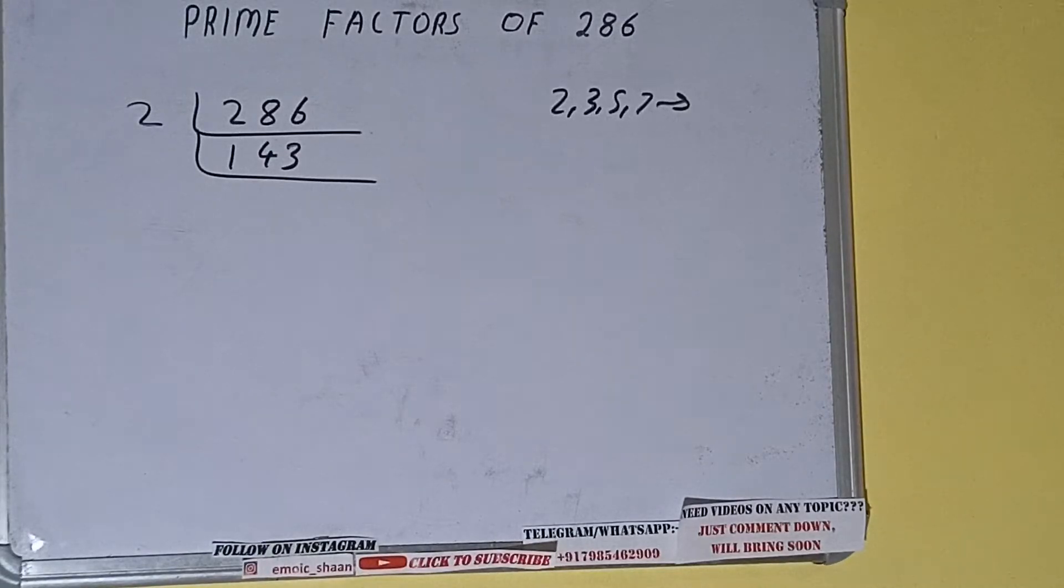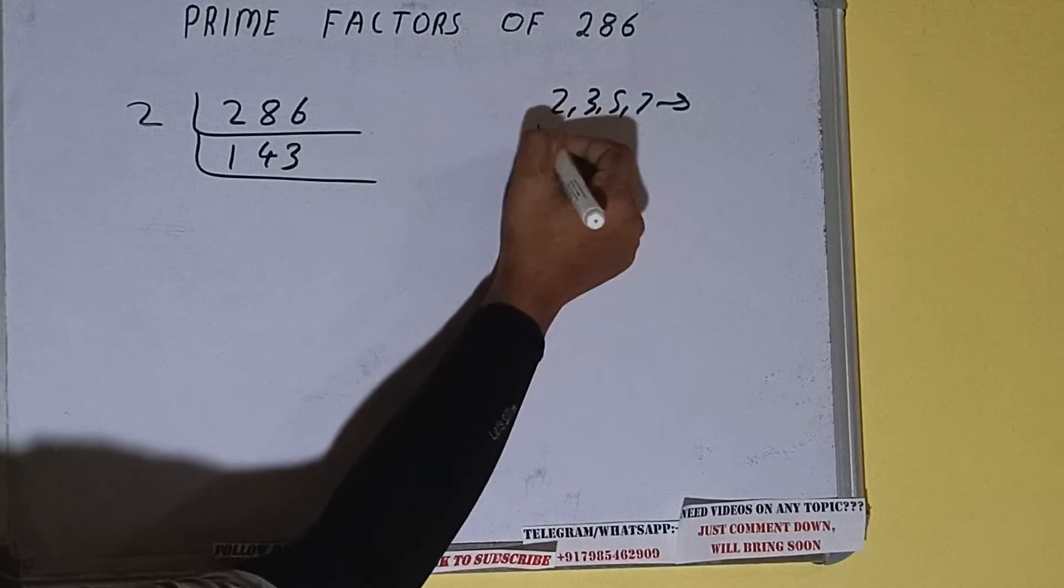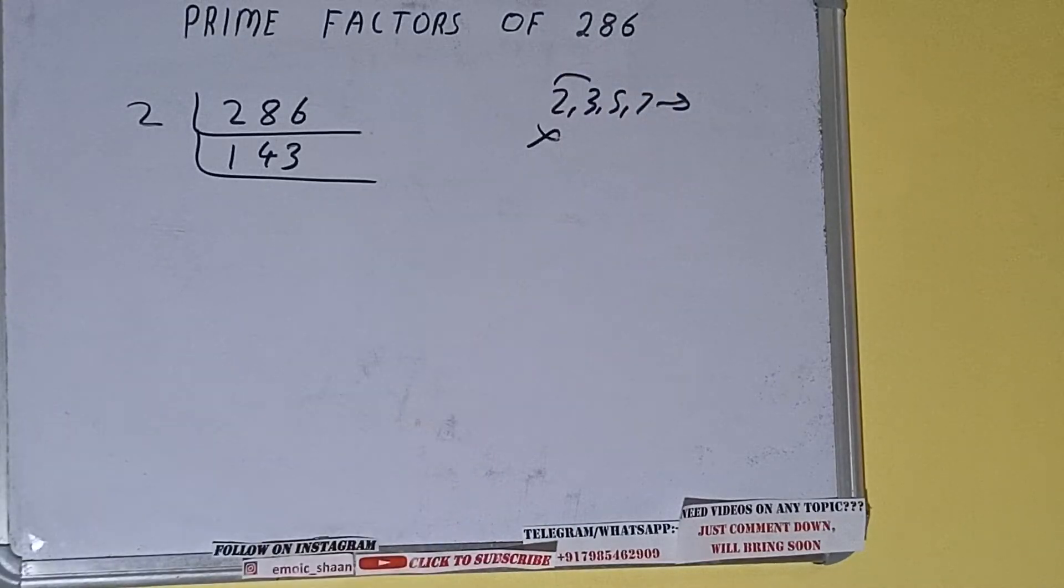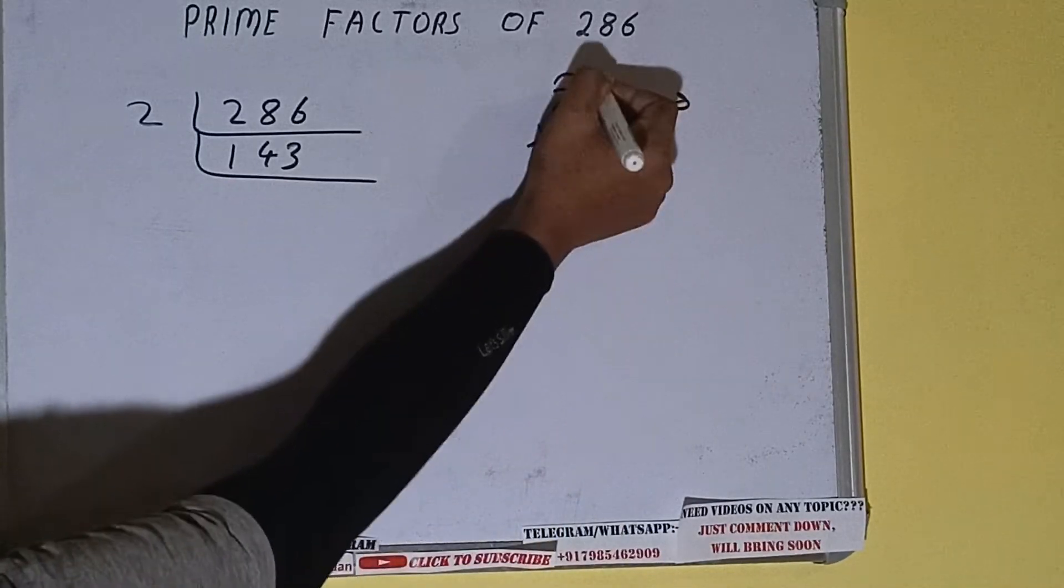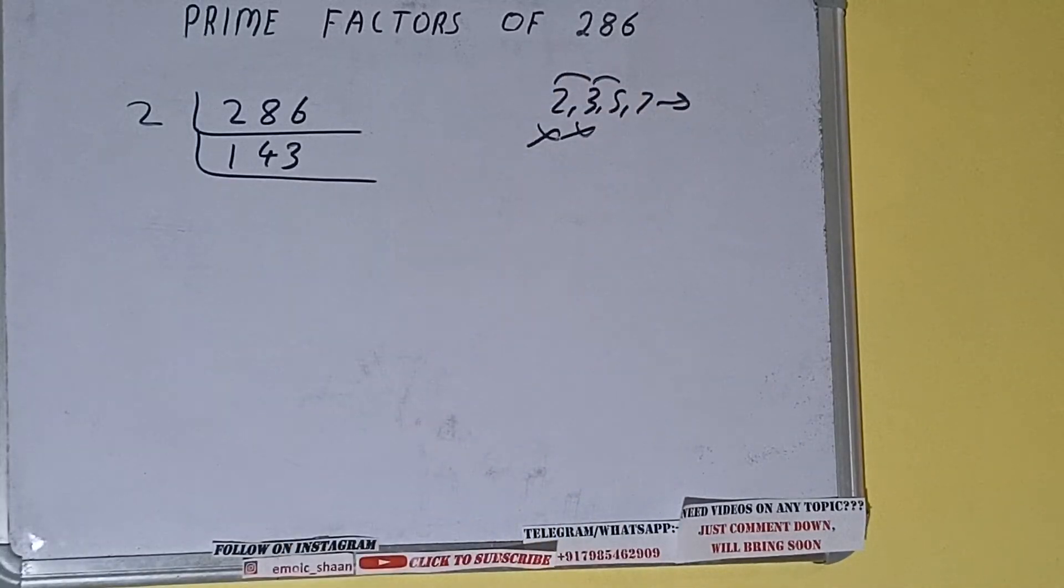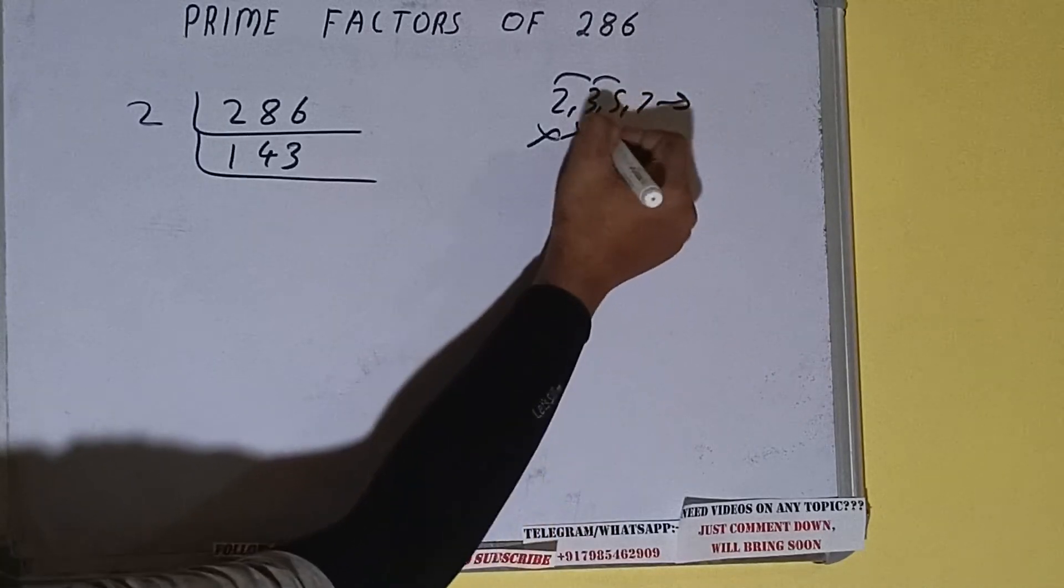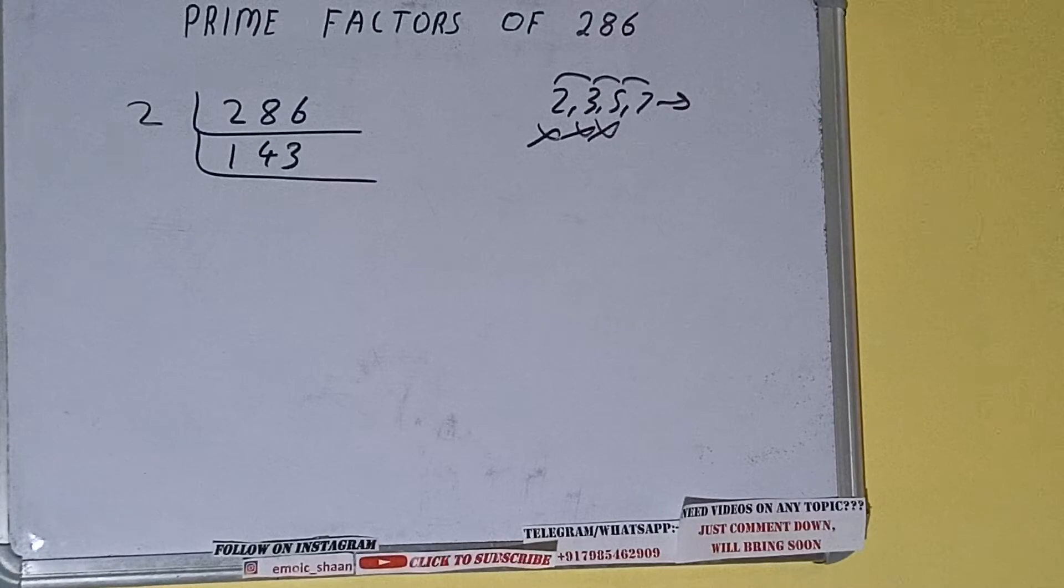So we'll be going to the next lowest prime number, that is 3. Is 143 divisible by 3? We need to check. 1 + 4 + 3 equals 8, not divisible by 3. So we'll be checking with the next lowest prime number, that is 5. The last digit is neither 5 nor 0, so it is not divisible by 5 as well.